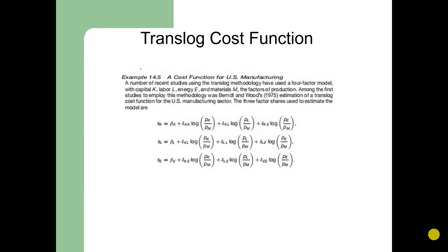Using an example from William H. Greene's book Econometric Analysis, a number of recent studies have used translog methodology in which they used a four-factor model including K for capital, L for labor, E for energy, and M for materials as the factors of production. Among the first studies to apply this methodology was Berndt and Wood's 1975 estimation of a translog cost function for the US manufacturing sector. The three factor shares used to estimate the model are as follows.